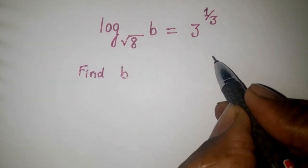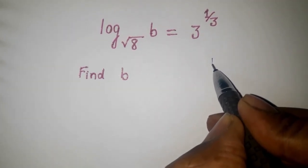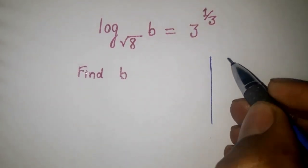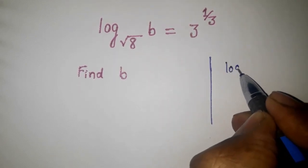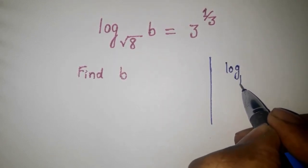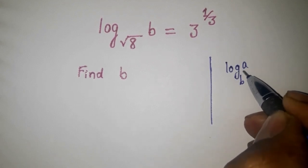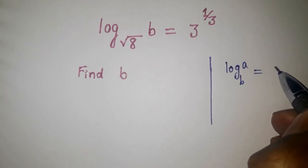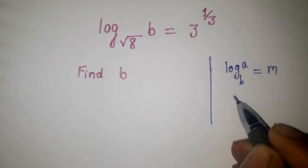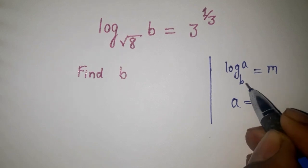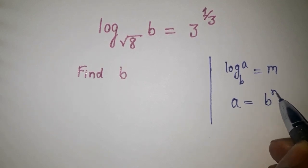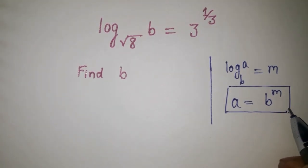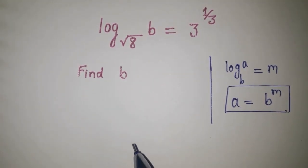We know a formula: log base B of A equals M, where B is the base and A is the argument. So that means A equals B to the power M. This formula I am going to use over here.